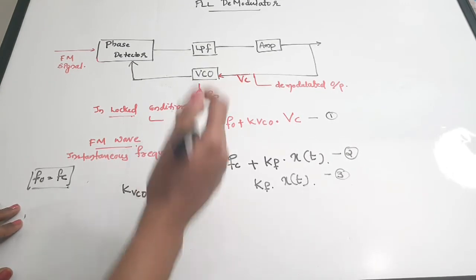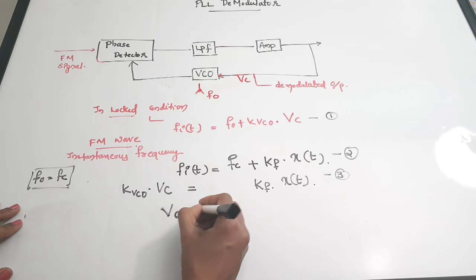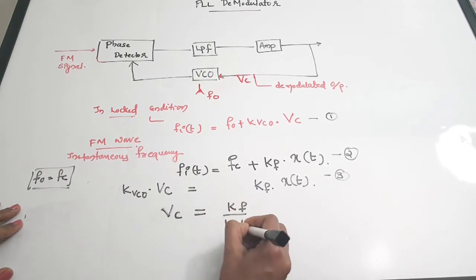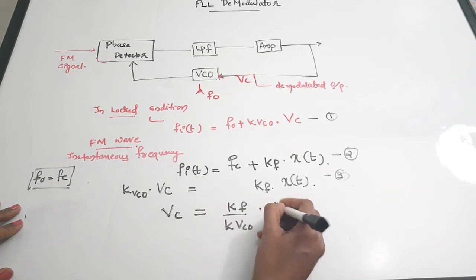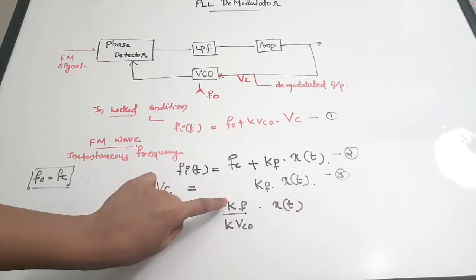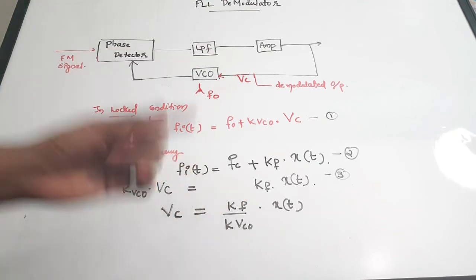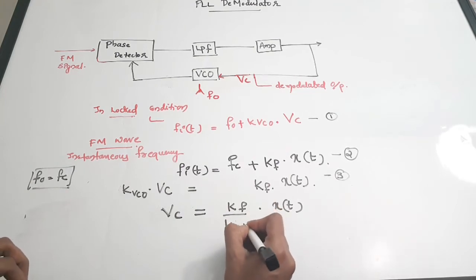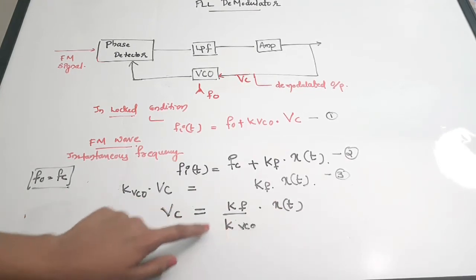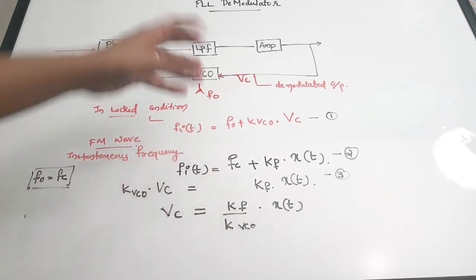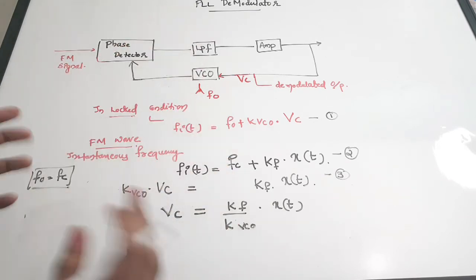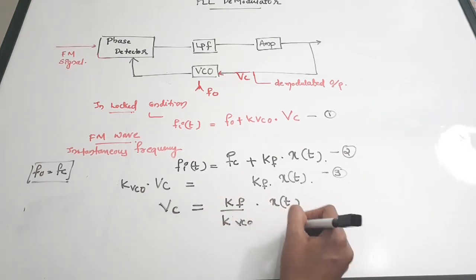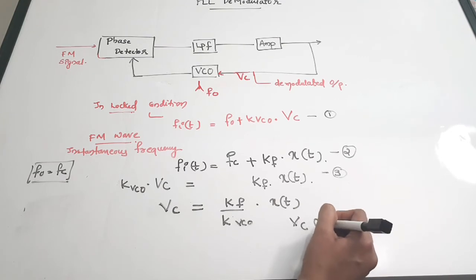From Equation 3, the control voltage VC of the voltage controlled oscillator is: VC equals KF divided by KVCO, multiplied by X(t). Remember that both KF, the frequency sensitivity, and KVCO, the constant of the voltage controlled oscillator, are constants.